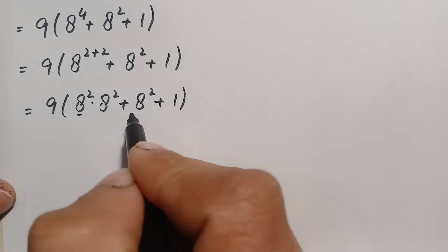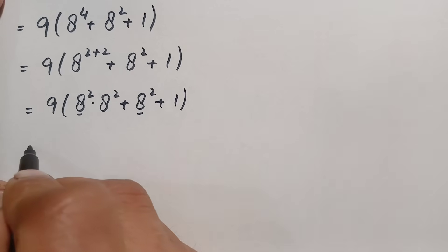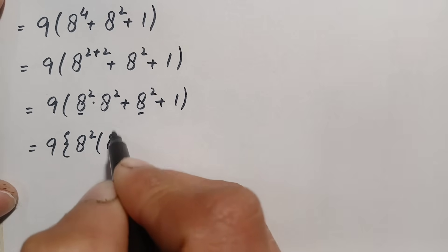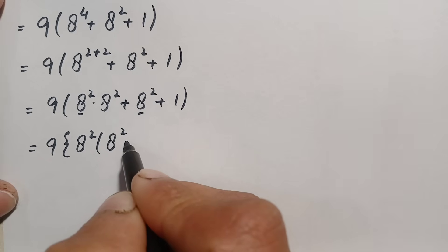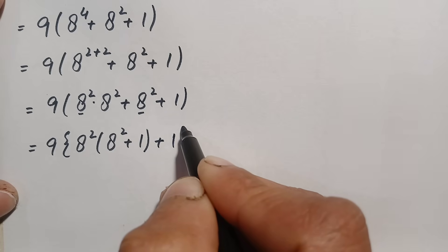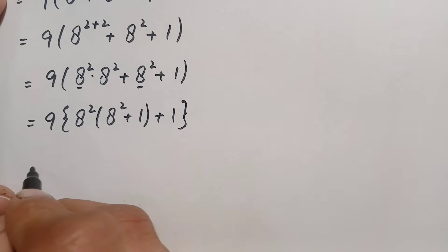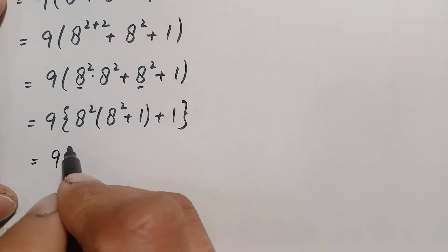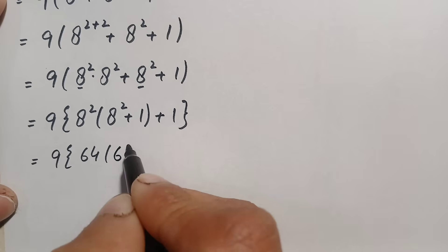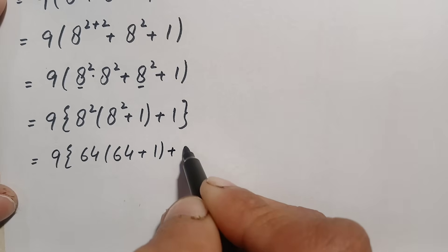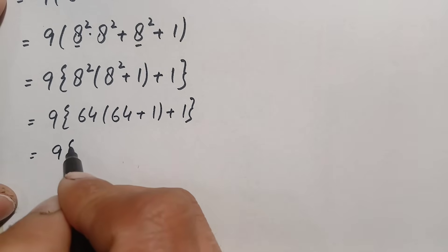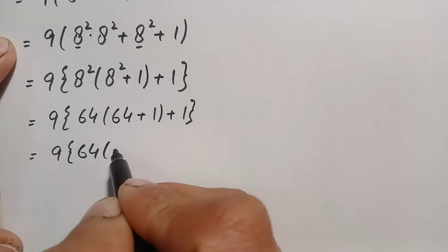Now we take a raised to power 2 as common from the first two terms inside the parenthesis, giving: 9 times, open parenthesis, a raised to power 2 times open bracket a raised to power 2 plus 1, close bracket, plus 1. Now simplifying, a squared is 64, so a squared plus 1 is 65. This becomes: 9 times, open parenthesis, 64 times 65, plus 1.